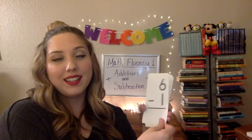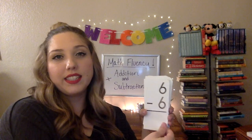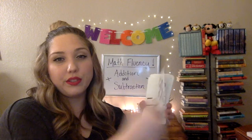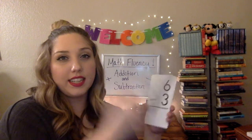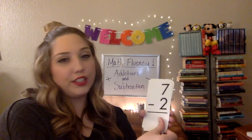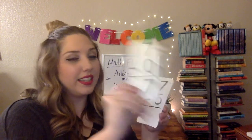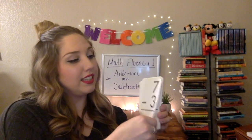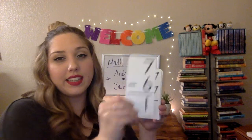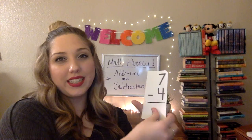5 minus 2 is 3. 6 minus 1 is 5. 6 minus 5 is 1. 6 minus 6 is 0. 6 minus 2 is 4. 6 minus 4 is 2. 6 minus 3 is 3. 6 minus 0 is 6. 7 minus 2 is 5. 7 minus 1 is 6. 7 minus 0 is 7. 7 minus 5 is 2. 7 minus 3 is 4. 7 minus 6 is 1. 7 minus 7 is 0. 7 minus 4 is 3.